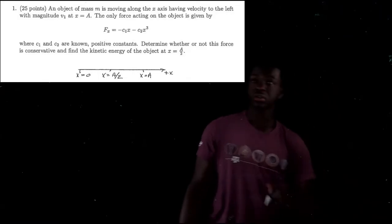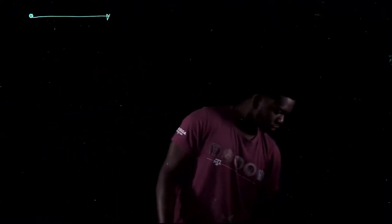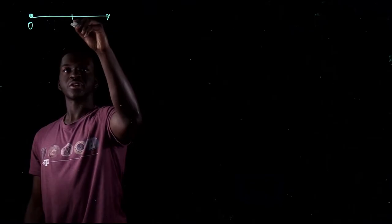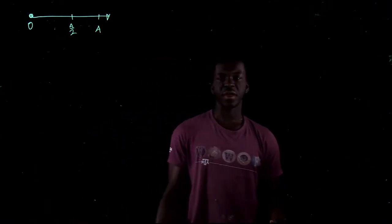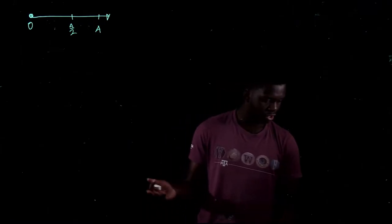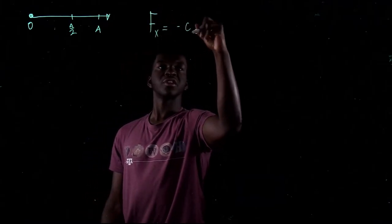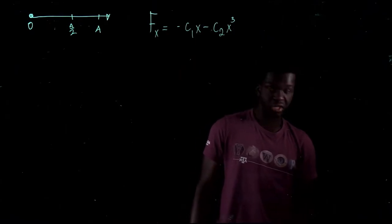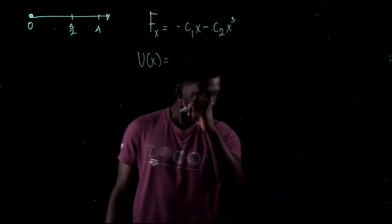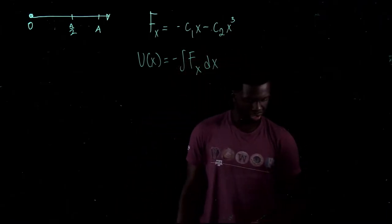So they gave us a diagram with positions 0, A over 2, and A marked. To find if the force is conservative, you have to find if it has a potential energy function. All you have to do is take the negative integral of the force they gave you. The force is F(x) equals negative C1x minus C2x cubed. So the potential energy is the negative integral of F(x) dx.